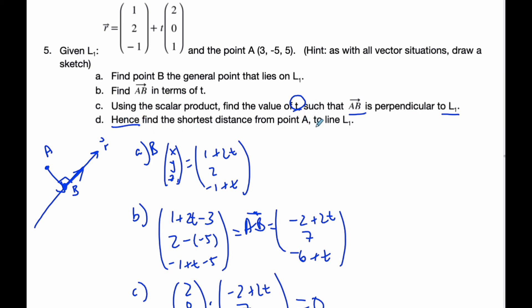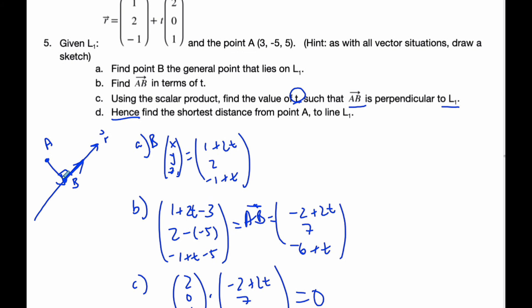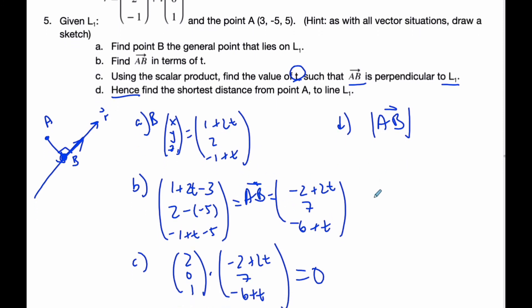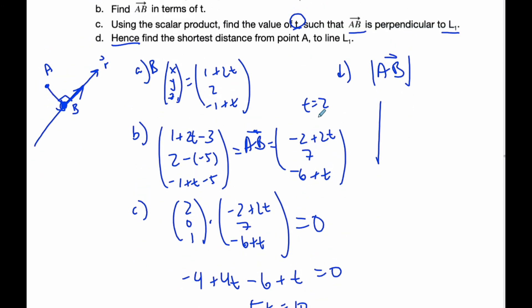Hence find the shortest distance from A to line L1. If I can find this point B, then I can find the magnitude of AB, and that will find me the shortest distance. I know t is 2, so I'm going to plug it in: -2+4...